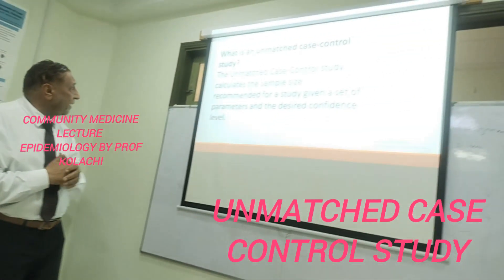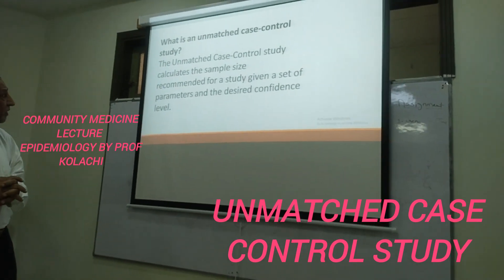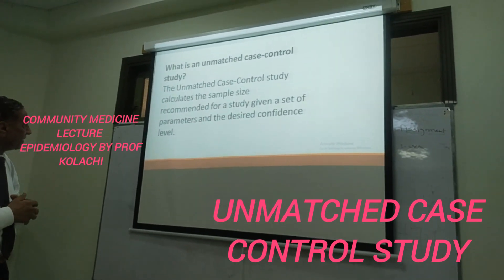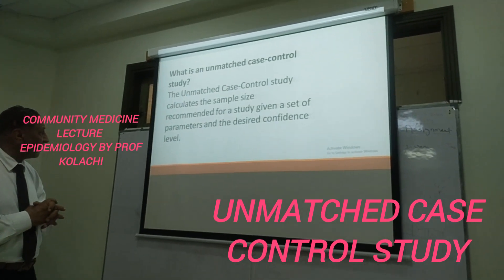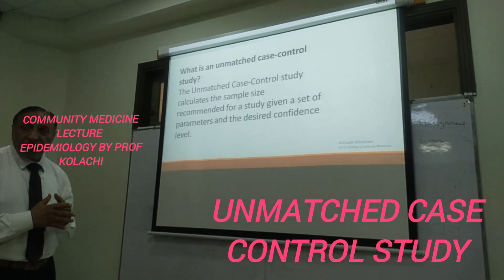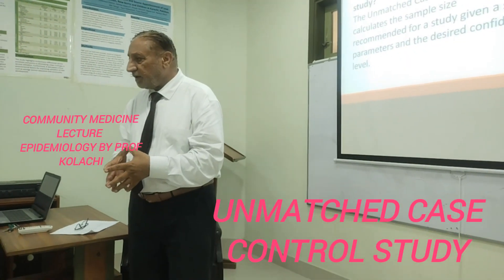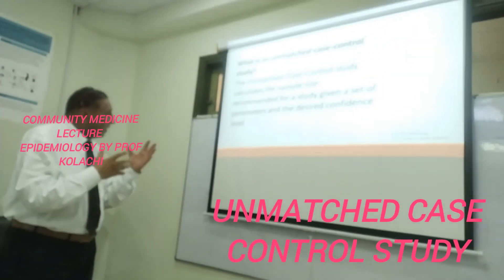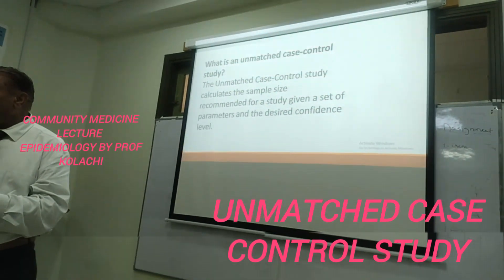The topic is UNMET. UNMET is a case-control study tool. The definition shows that UNMET case-control study calculates the sample size recommended for a study given a set of parameters and the desired confidence level. Normally a 95% confidence level is used, and various parameters or indicators are defined before the study, according to which the sample size is calculated.